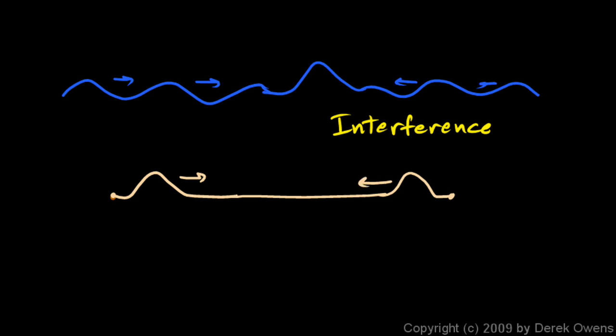They actually merge into a larger wave, and they add up mathematically. If this wave is one foot tall and this wave over here is one foot tall, then they will add up to a wave that's two feet tall. Waves can add up like that. They can occupy the same place at the same time, and they will mathematically add up.